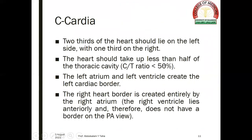C stands for the cardiac. Normally, two-thirds of the heart should lie on the left side, with one-third on the right. The heart should take up less than half of the thoracic cavity — that is, the cardiothoracic ratio should be less than 50%. The left atrium and left ventricle create the left cardiac border. The right heart border is created entirely by the right atrium, because the right ventricle lies anteriorly.